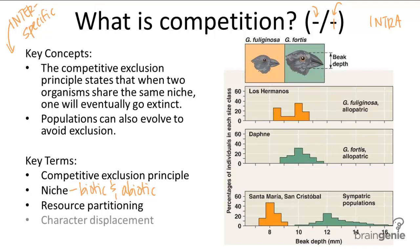The other option is called character displacement. This is when both organisms undergo divergent evolution in physical characteristics to give them access to separate niches. A primary example of this would be Darwin's finches. You can see that these two finches, when living together, have different beak sizes in this graph — the orange background finch has a smaller beak size than the bluish-green background finch. Interestingly, these same two species of finch, when found living separately on different islands in the Galapagos, have pretty much the same beak size.